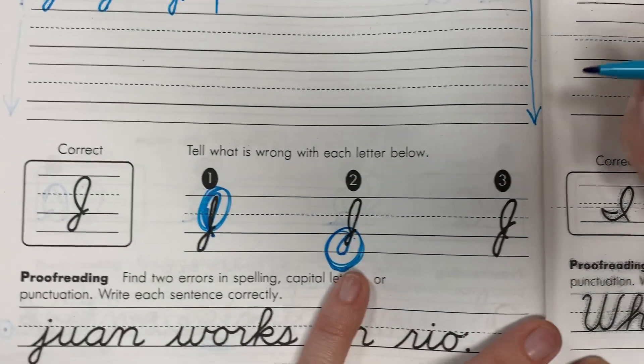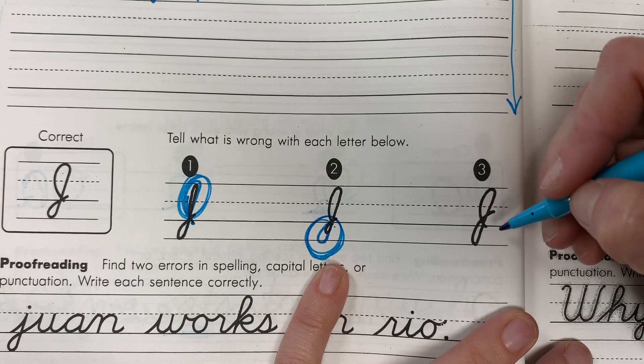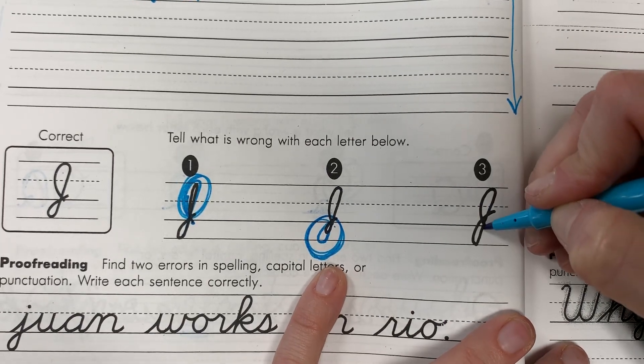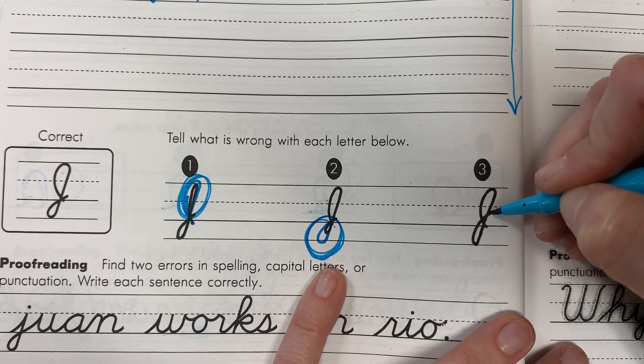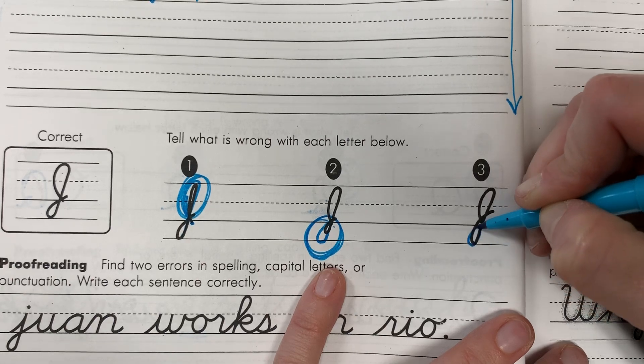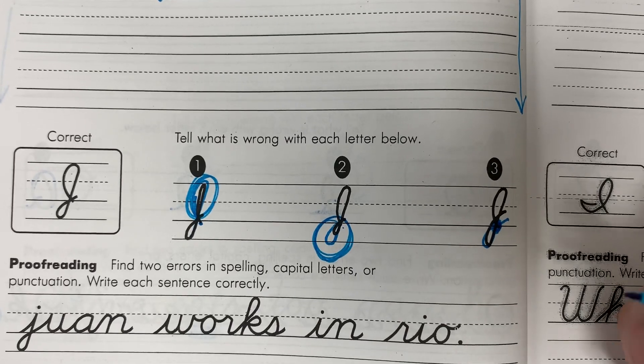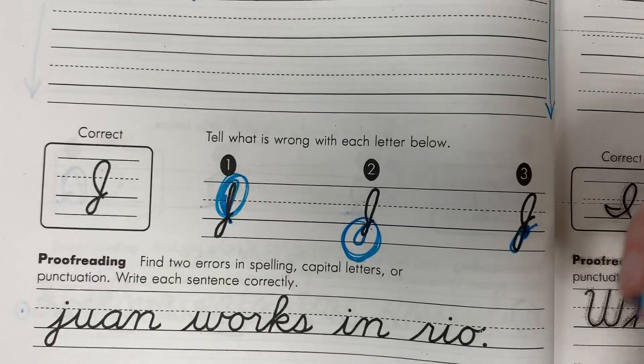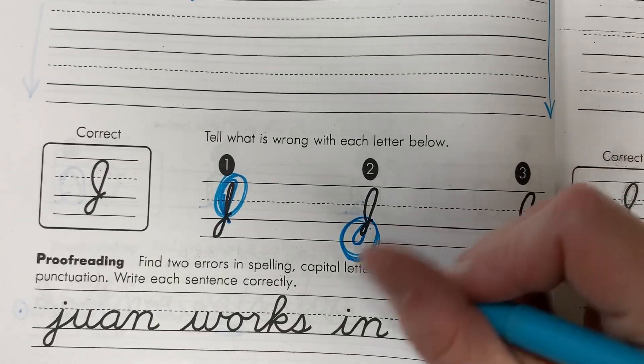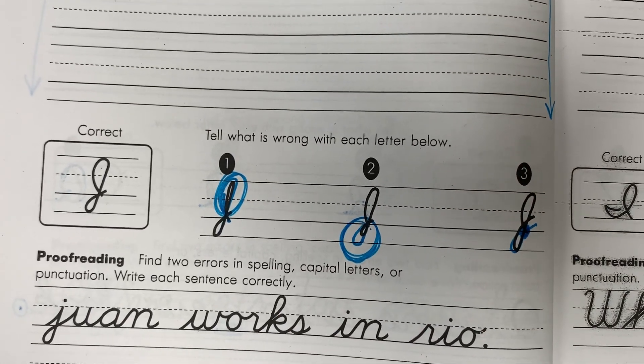And then for number three, what happened here was where they come back up, they went too wide. So when you come back up, you need to touch it at the bottom line, right there at the bottom. That's where you need to come together. So as you finish this top part, make sure that you aren't doing any of those three mistakes.